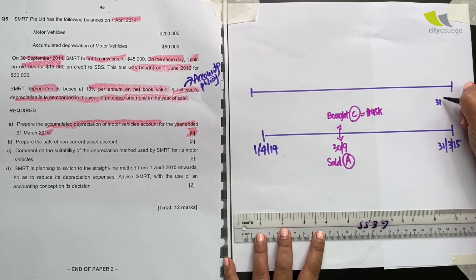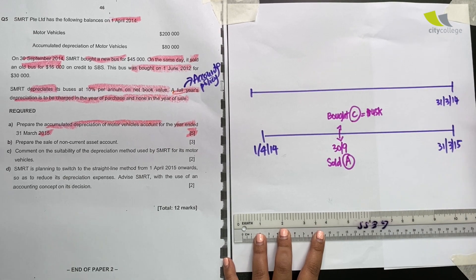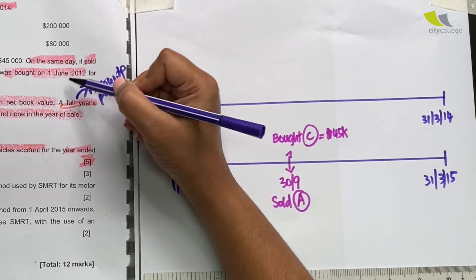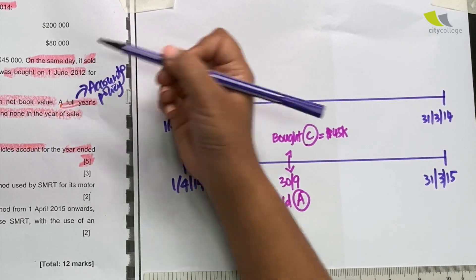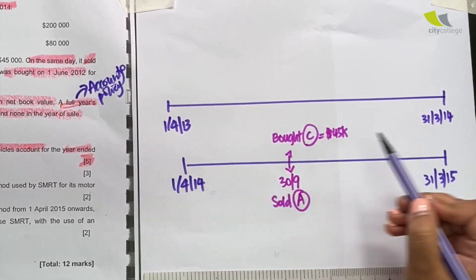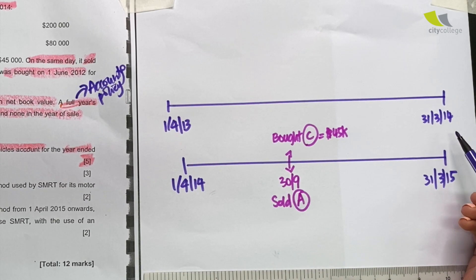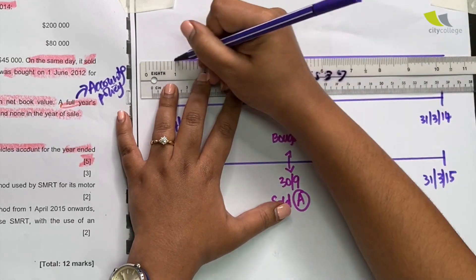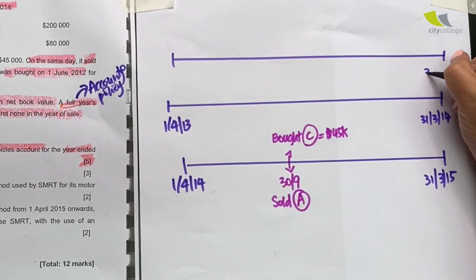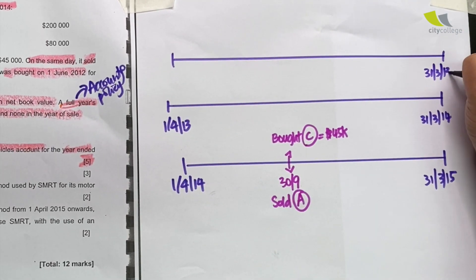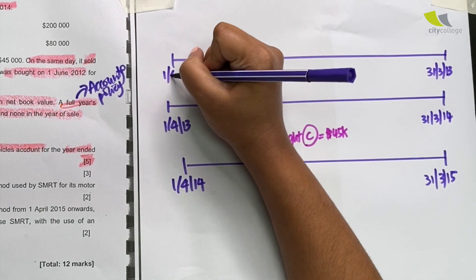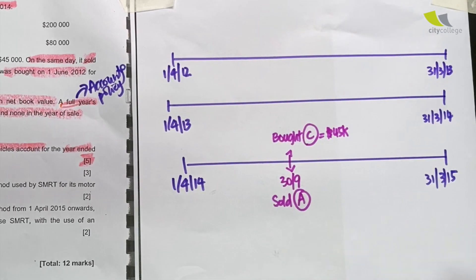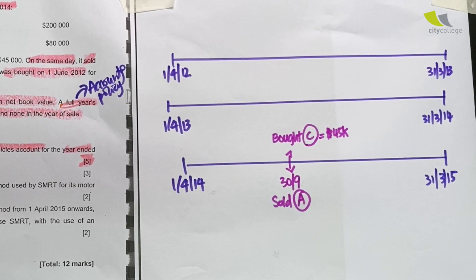Let's draw one year before. So if this year ends 31st March 15th, the year before will end 31st March 14th, and I will start this year 1st April 13th. Look at the date 1st June 2012. Does it fall in this period? Looks like it doesn't. So what do I do? I draw one more year before that.